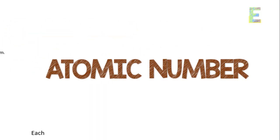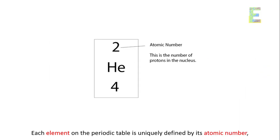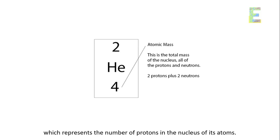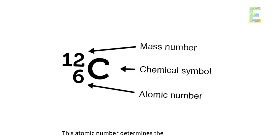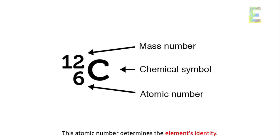Atomic number. Each element on the periodic table is uniquely defined by its atomic number, which represents the number of protons in the nucleus of its atoms. This atomic number determines the element's identity.